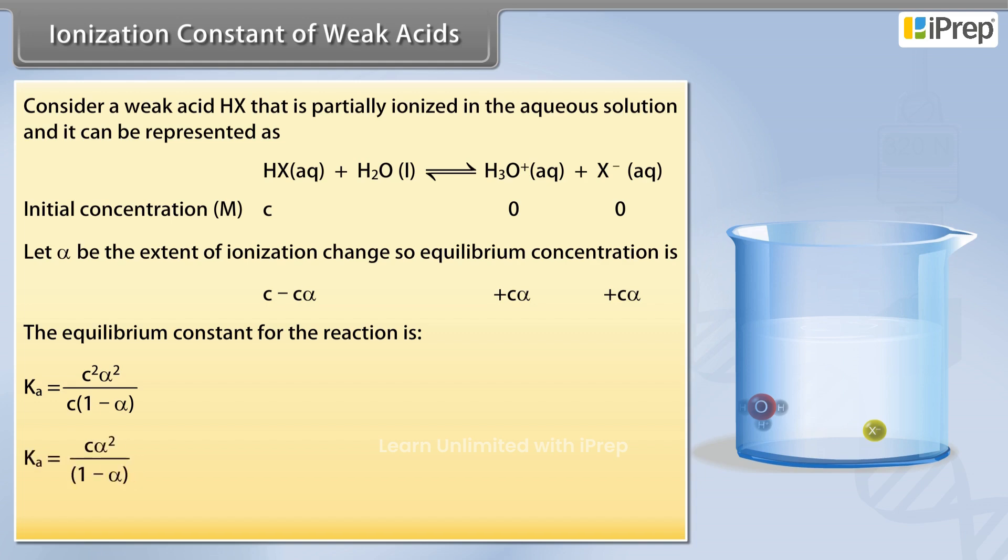Ka equals C alpha squared divided by 1 minus alpha. Ka is called the dissociation or ionization constant of acid HX.